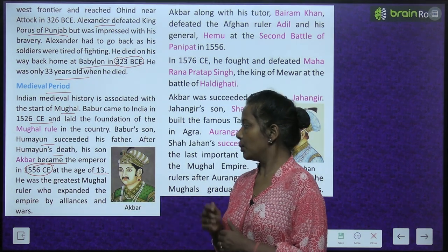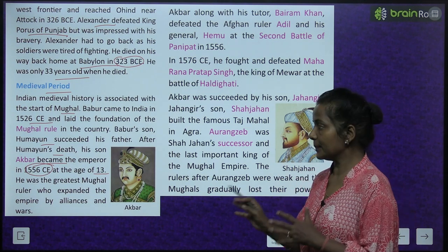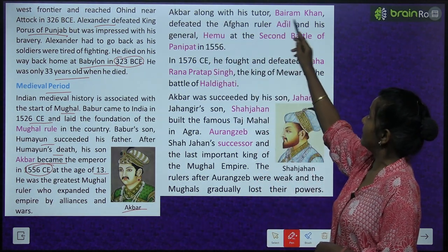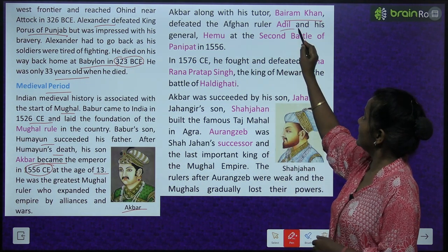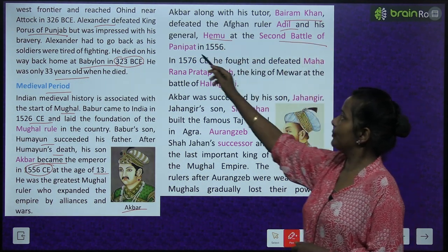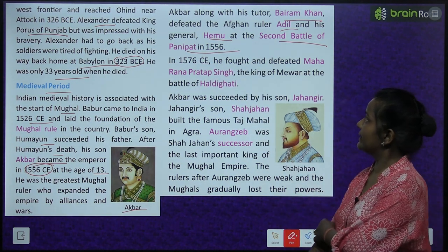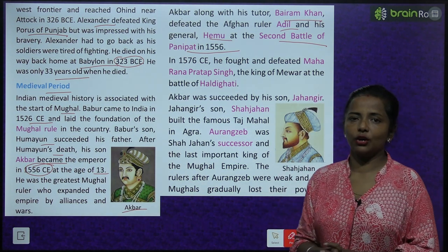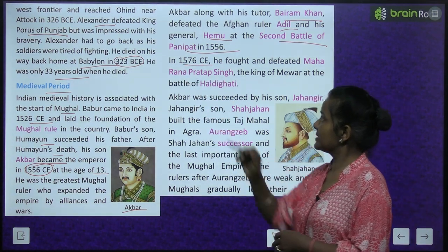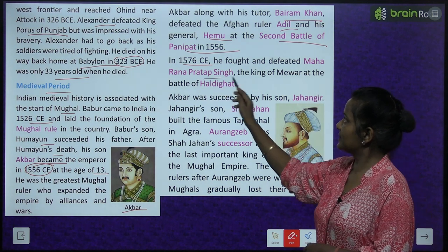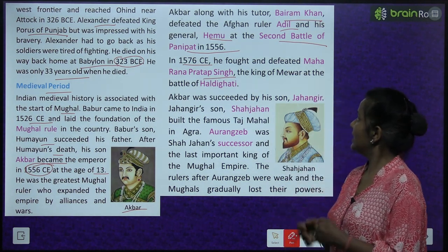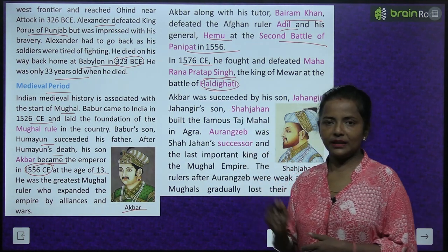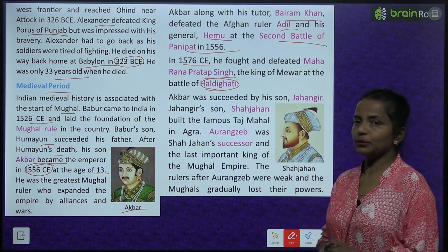Akbar was the greatest Mughal ruler who expanded the empire by alliances and wars. Akbar, along with his tutor Bairam Khan, defeated the Afghan ruler Adil and his general Hemu at the Second Battle of Panipat in 1556. In 1576 CE, he fought and defeated Maharana Pratap Singh, the King of Mewar, in the Battle of Haldighati.